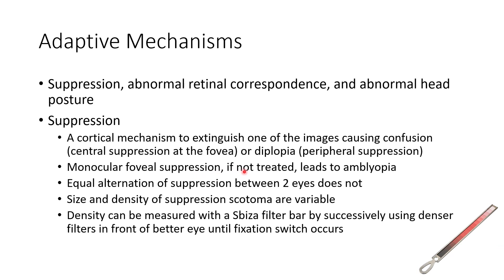Monocular foveal suppression, if not treated, leads to amblyopia. However, equal alternation of suppression between the two eyes does not lead to amblyopia. The size and density of the suppression scotoma are variable. This density can be measured with the Sbiza-Vaglini filter bar by successively using denser filters in front of the better eye until fixation switch occurs.